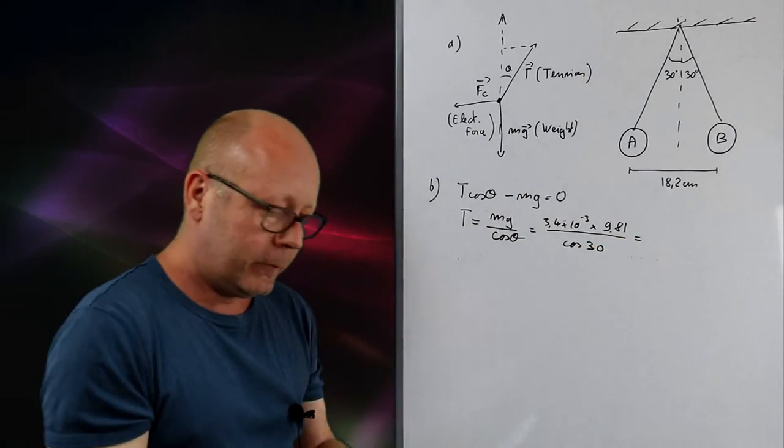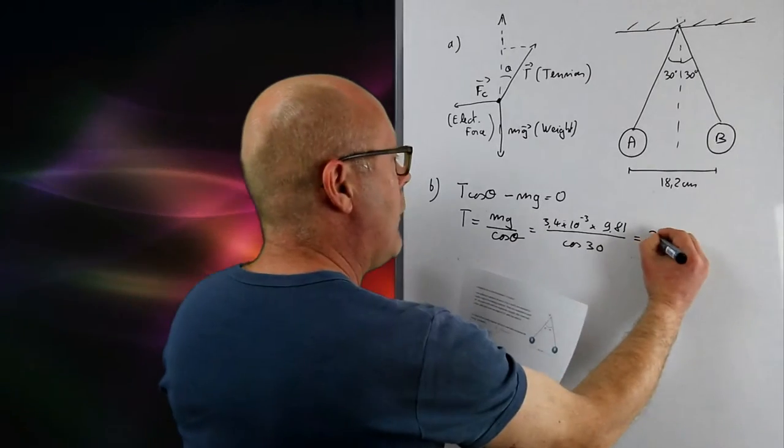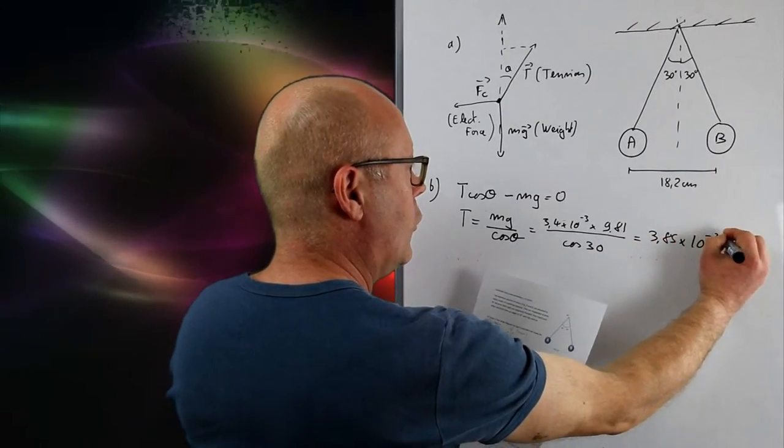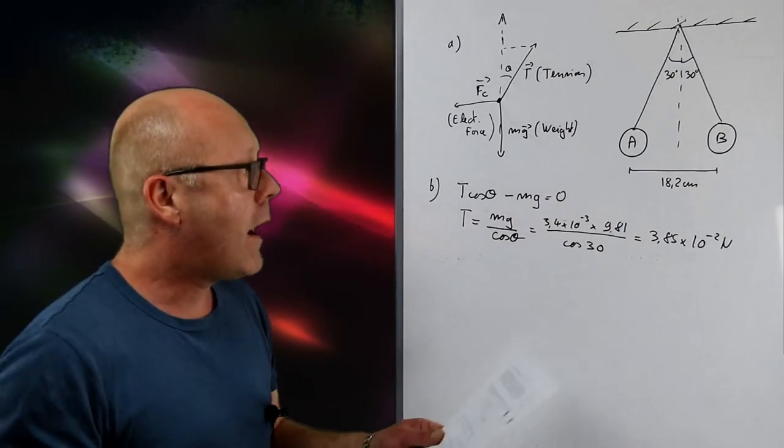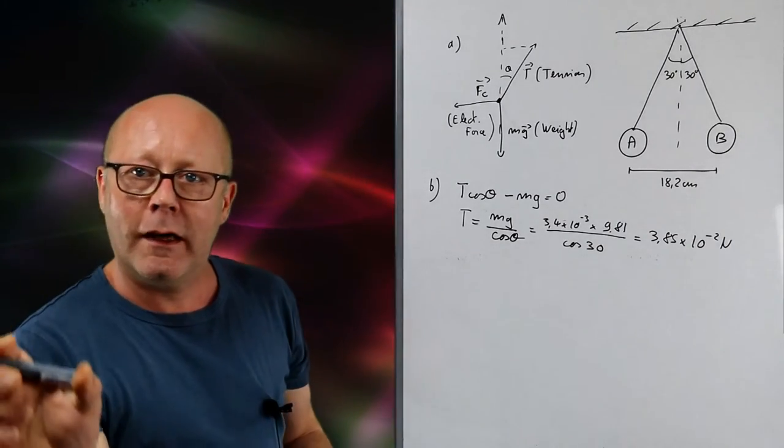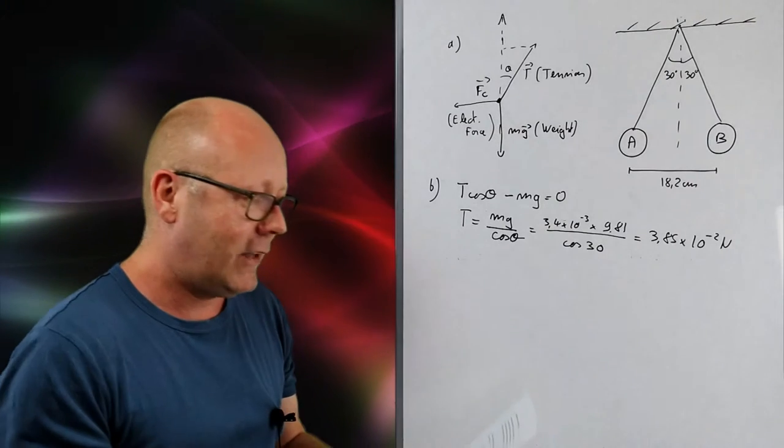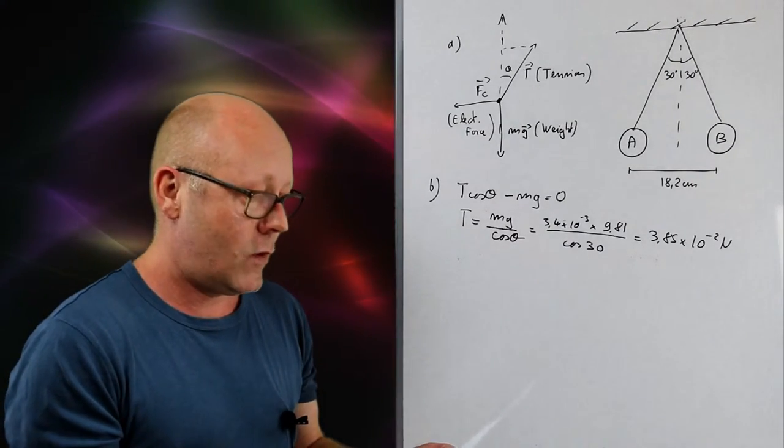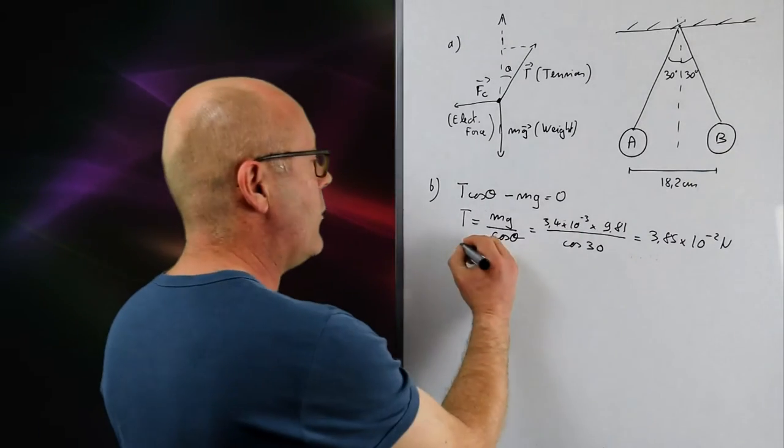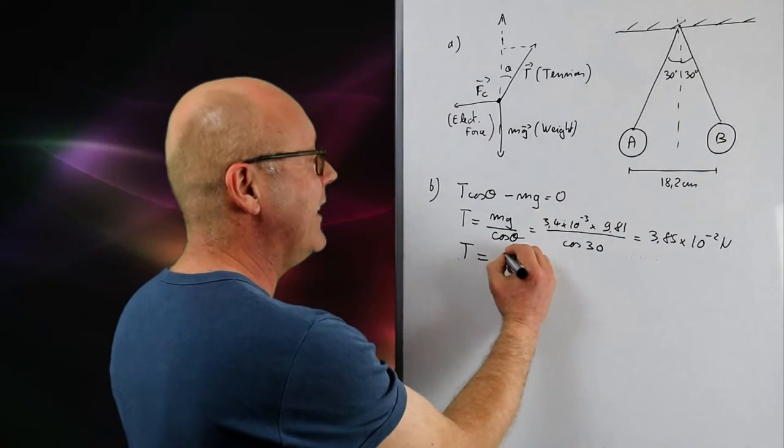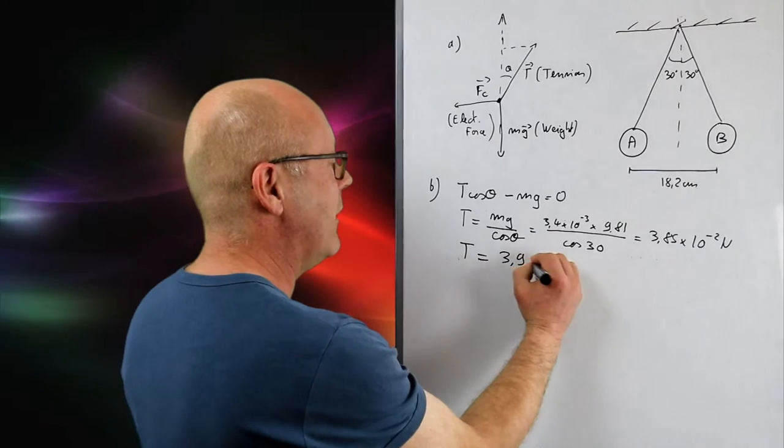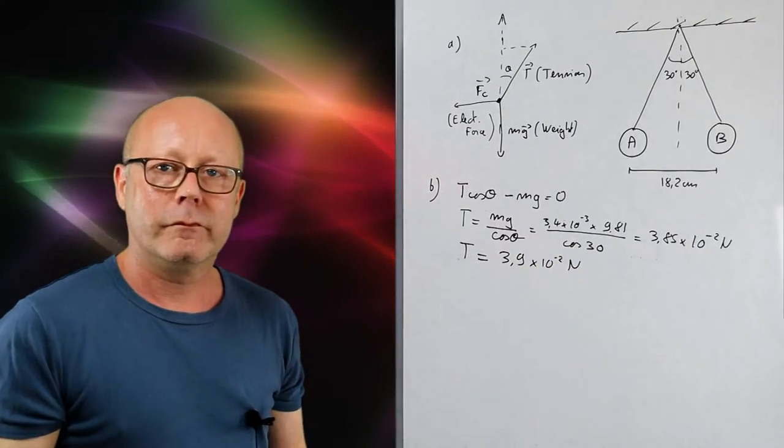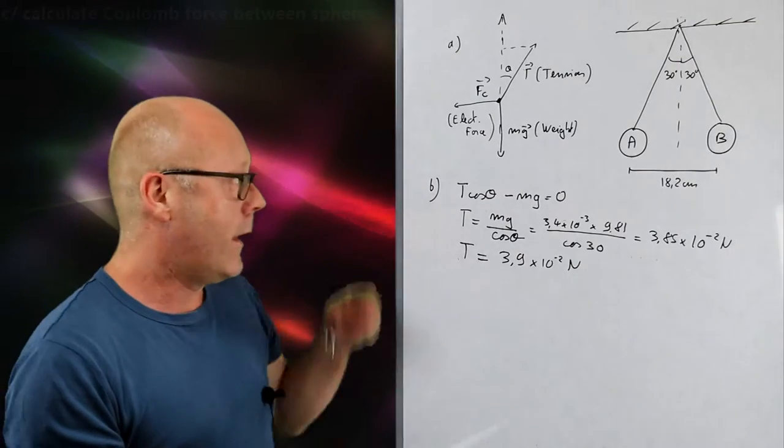I will find 3.85 by 10 to the minus 2 newtons. Now, before I conclude and put this number into the little box for that in the test, I look at the number of significant figures I have. Well, I have 2. So my final answer will be T equals 3.9 by 10 to the minus 2 newtons. And I've got 3 marks.